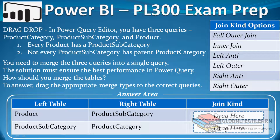On the right side we have available join types as options: full outer join, inner join, left anti join, left outer join, right anti join, and right outer join. In the bottom area we have the answer area where we have the given left and right side tables, and we have to drag the join kind. So we need to identify the relationship between product and product subcategory, and between product subcategory and product category.